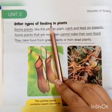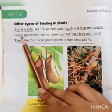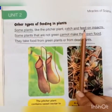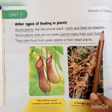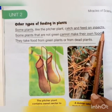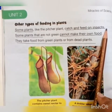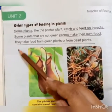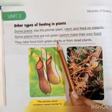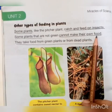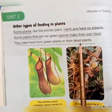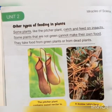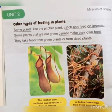Other types of feeding in plants: some plants catch and feed on insects. Some plants that are not green can't make their own food — they take food from green plants or from dead plants.